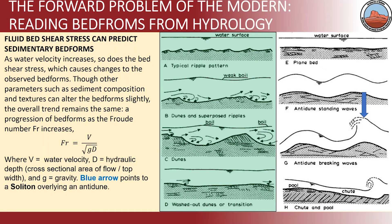That was the forward problem — to take something you see in the modern and try to say something intelligently about what the hydrology was from the bed forms. Fluid shear stress can predict bed forms. Classically, we have stages that go from ripples up to climbing ripples, sand waves and dunes, to plane beds. Then there's a beautiful episode of standing waves which, when they break, move in reverse. This bed form is complicated and its preservation is unusual, if not rare. It can be defined by the Froude number; a Froude number of one is where plane beds initiate, and above Froude number one, we obtain anti-dunes.